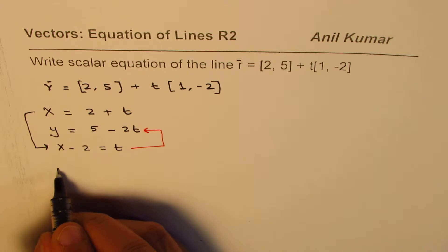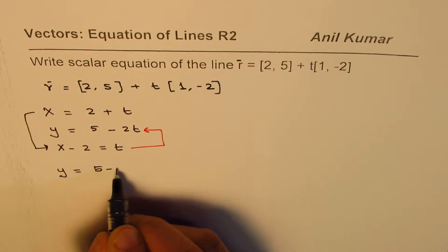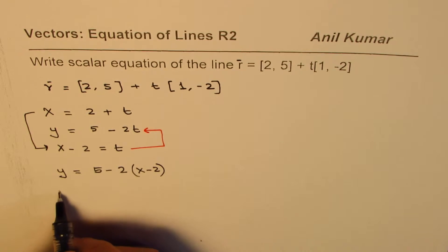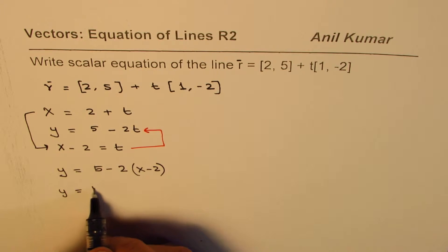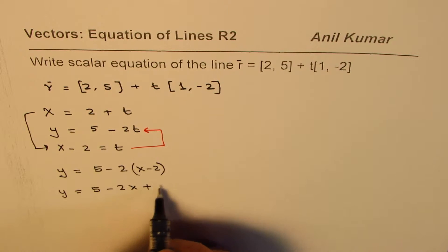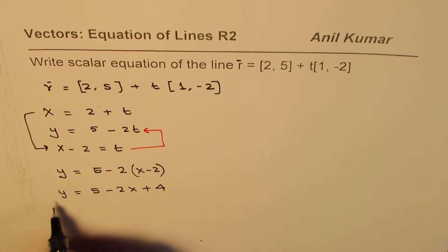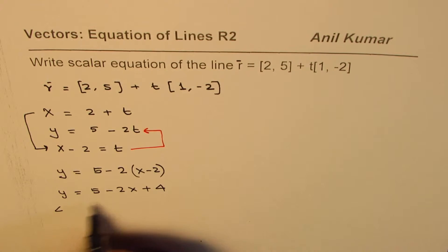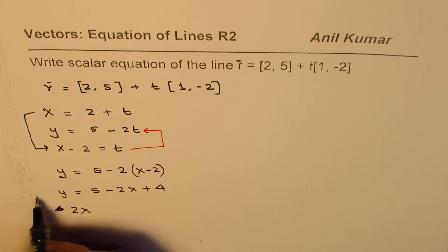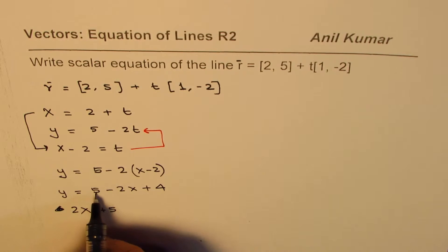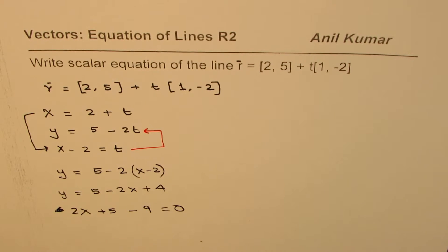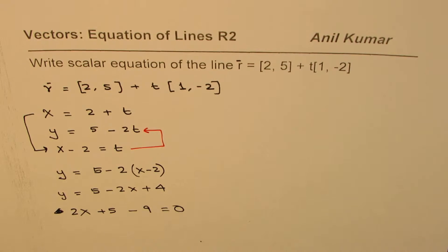What we get here is y equals 5 minus 2 times (x minus 2), and now we can bring them together. We have y equals 5 minus 2x plus 4. Bringing them together to the left side ensuring that coefficient of x is positive, we have 2x plus y, 5 plus 4 is 9, when you take it to the left side becomes minus 9 equals 0. So that becomes the scalar or Cartesian equation. That is one way of doing it.